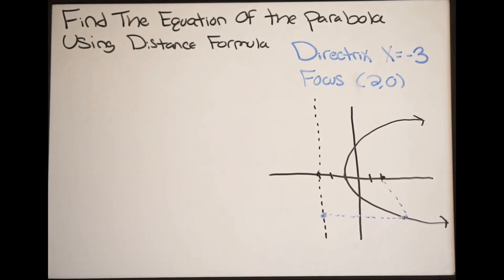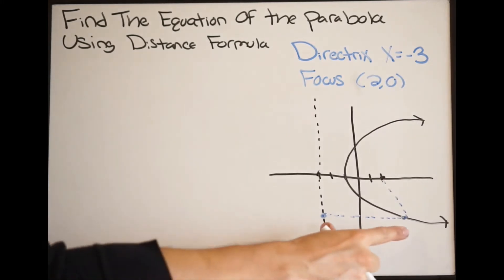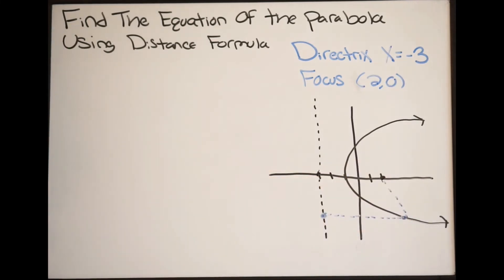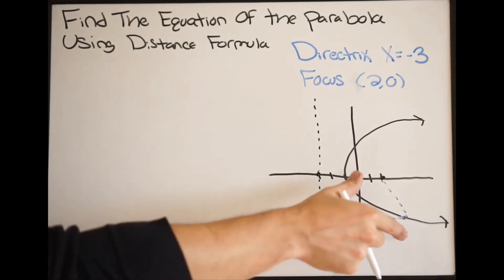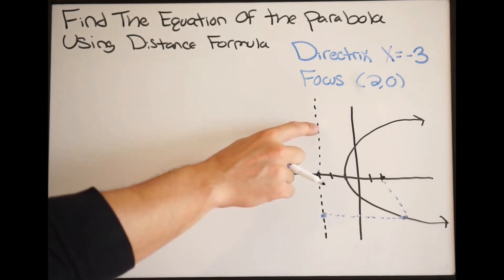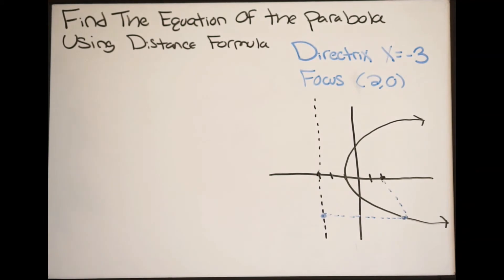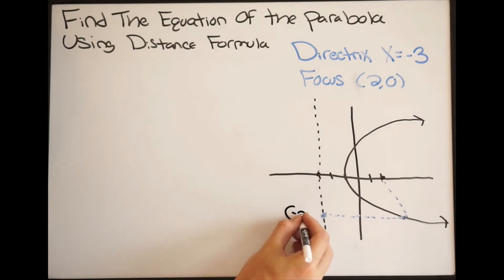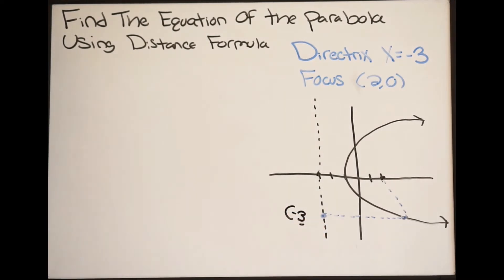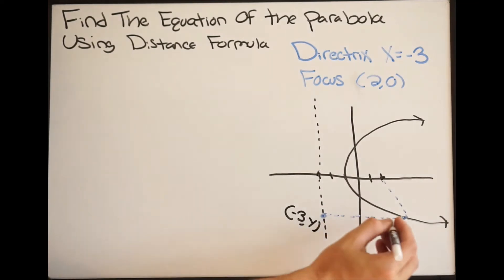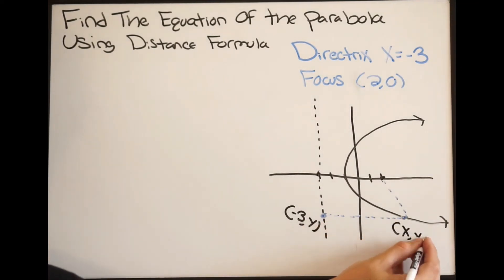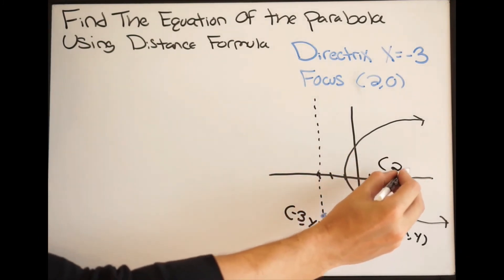Although the picture is not drawn to scale, these distances are always going to be equal no matter what — wherever you draw, these two lines are always equal. So filling in the information: the point on the directrix is negative 3, y. The point on the parabola we'll call x, y. And our focus is 2, 0.